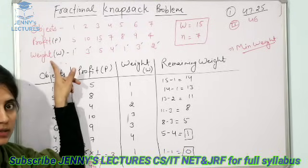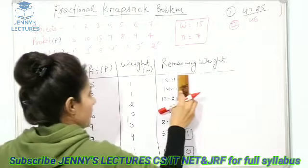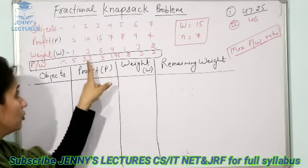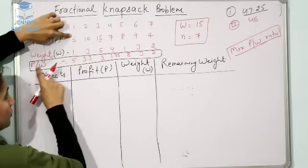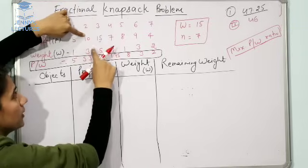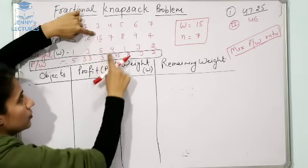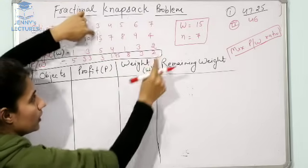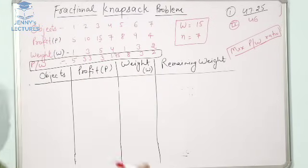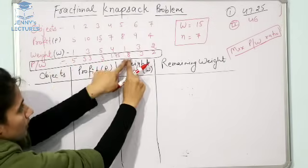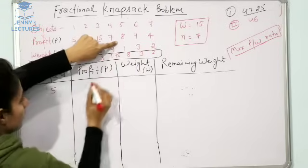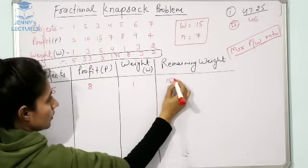Third approach: find the profit/weight ratio for each item. Object 1: 5/1 = 5. Object 2: 10/3 = 3.3. Object 3: 15/5 = 3. Object 4: 7/4 = 1.75. Object 5: 8/1 = 8. Object 6: 9/3 = 3. Object 7: 4/2 = 2. Now select items in order of maximum profit/weight ratio. Maximum ratio is 8 — select object 5, profit 8, weight 1. Remaining: 15 − 1 = 14.